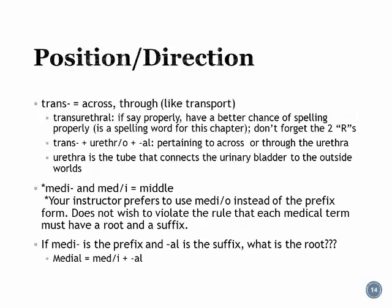Supra means 'above,' 'over,' or 'excessive,' so suprapubic means above or over the pubic area. Trans means 'across' or 'through' — think transport. Transurethral refers to across or through the urethra, which is the tube that urine passes through before reaching the outside world.